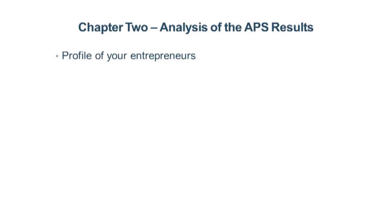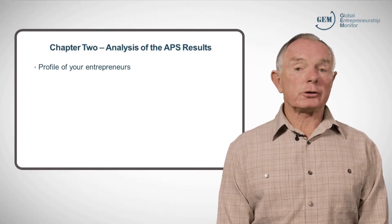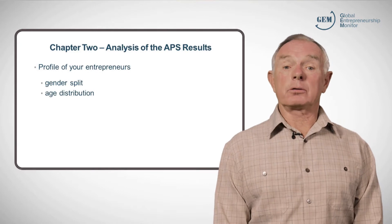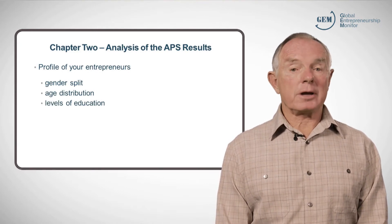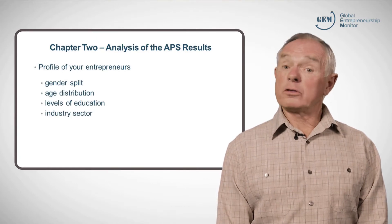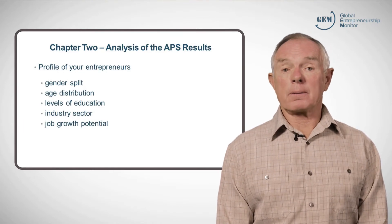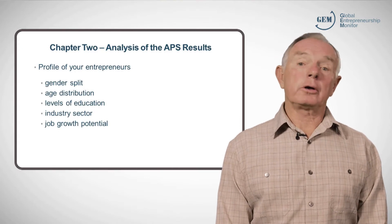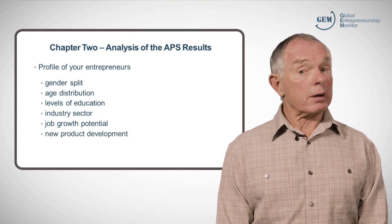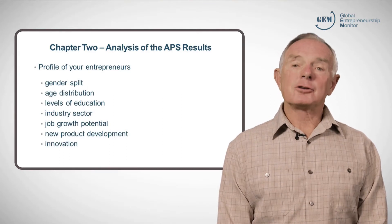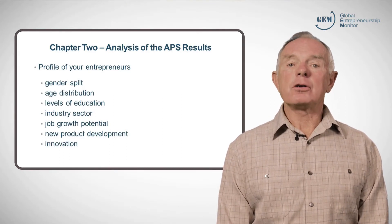Once the basics have been discussed, it is a good idea to start to look at the profile of the entrepreneurs in your country. This includes information on the gender split, the age categories of the entrepreneurs, their levels of education, what sectors they work in, and what the gross potential of their businesses are. If you so wish, you could also extract information on new product development and innovation, to name just a few more areas to look at. The choice is yours, as there is no set format.